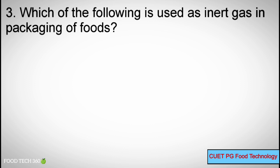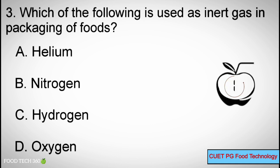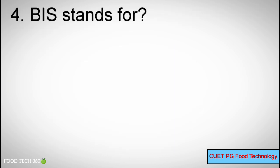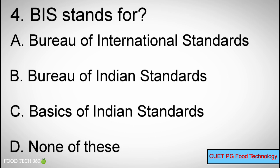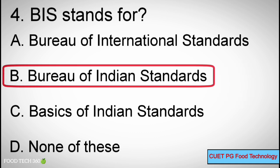Q3: Which of the following is used as an inert gas in packaging of foods? A. Helium, B. Nitrogen, C. Hydrogen, D. Oxygen. Correct answer: B. Nitrogen. Q4: BIS stands for — A. Bureau of International Standards, B. Bureau of Indian Standards, C. Basics of Indian Standards, D. None of these. Correct answer: B. Bureau of Indian Standards.